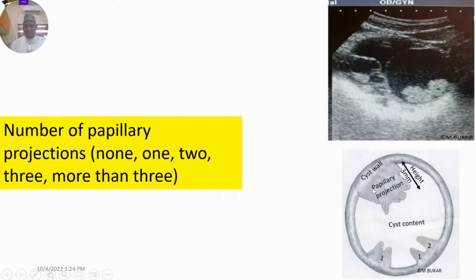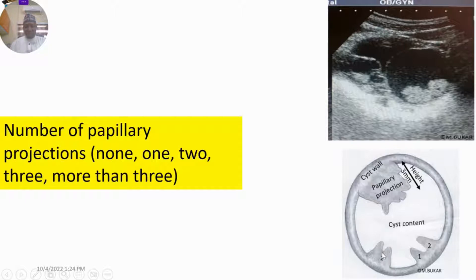If you are taking the measurements of a papillary projection, do not include the measurement of the cyst wall — only measure the height of the papilla. If it is greater than three millimeters, it is a papillary projection. If it is less than three millimeters, it is wall irregularity. If you have a papilla with an indentation of less than 50%, it is considered a single papilla. If the indentation is more than 50%, it is considered two separate papillae.